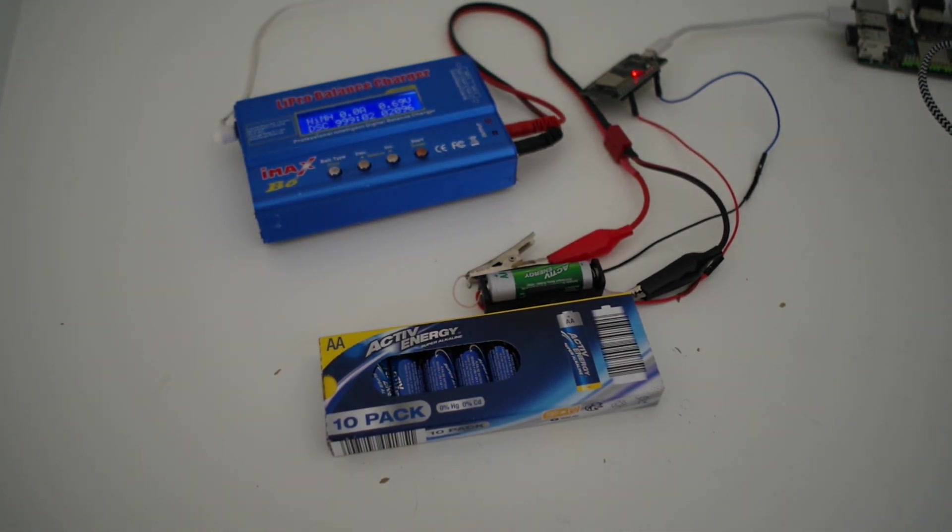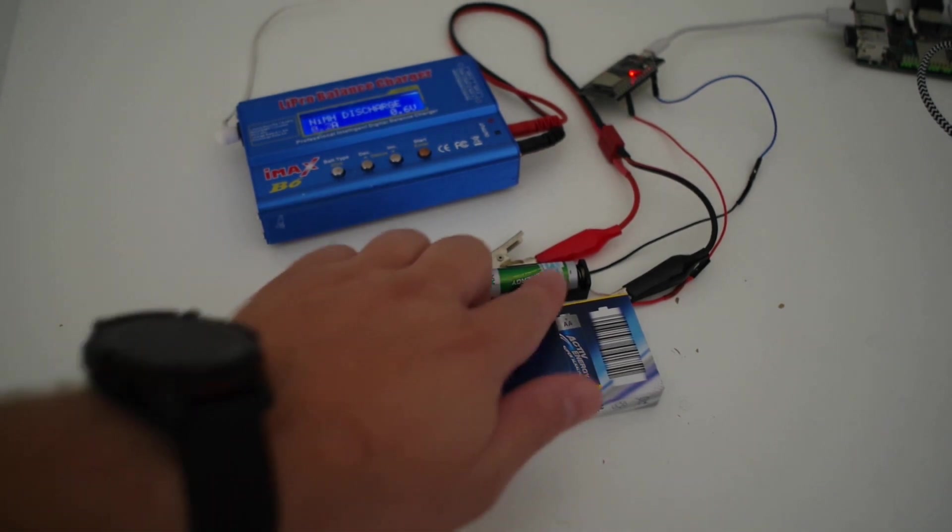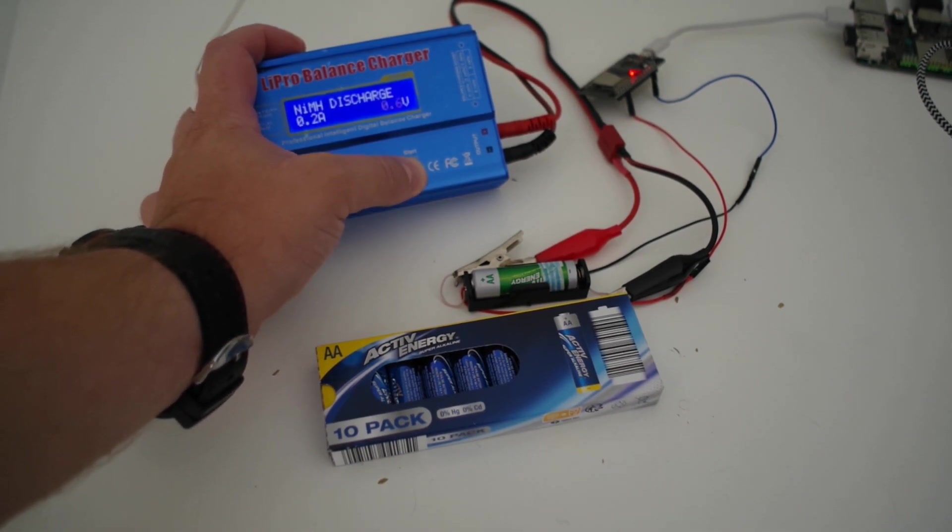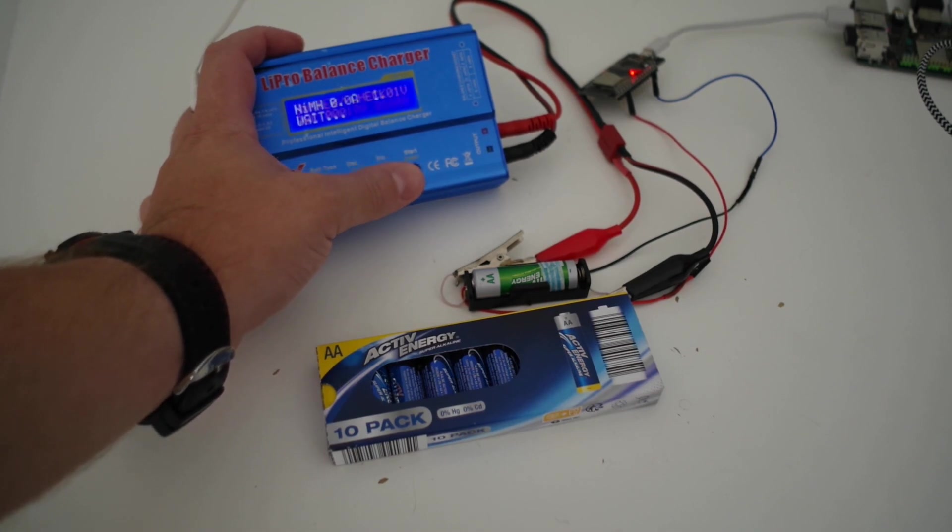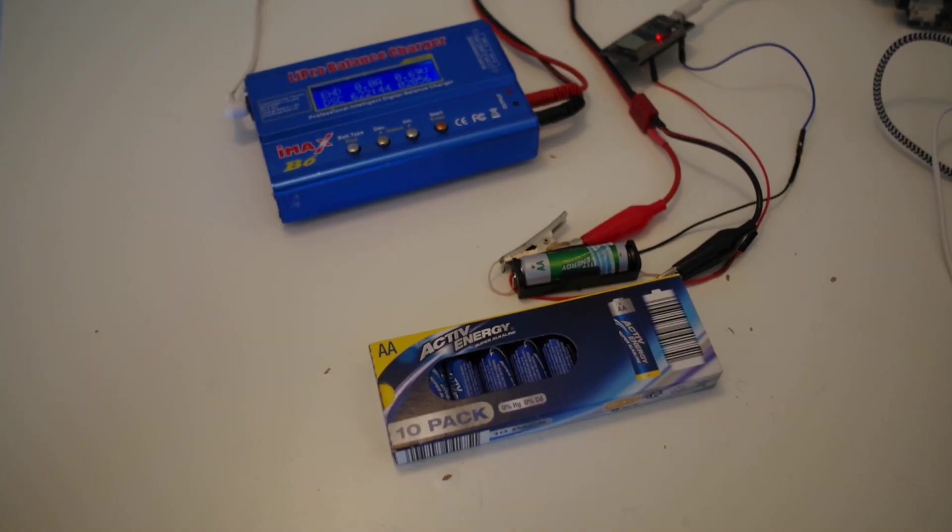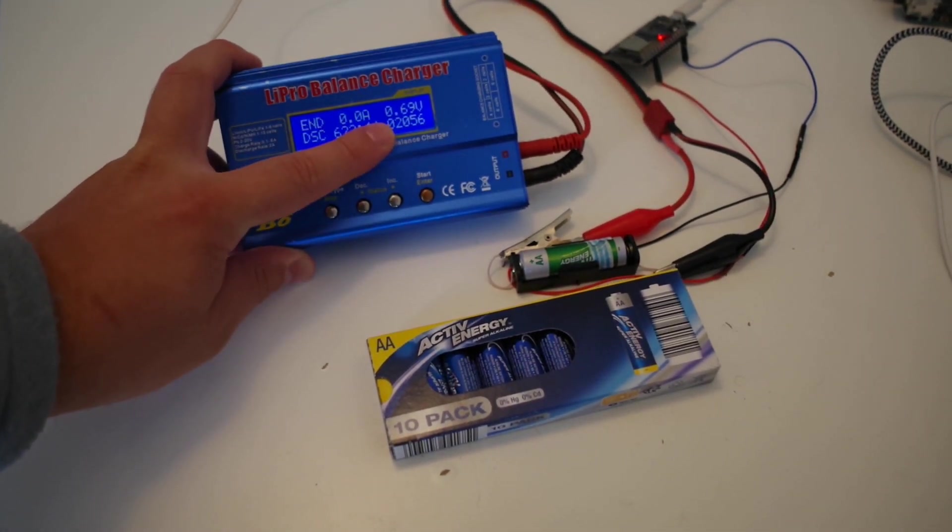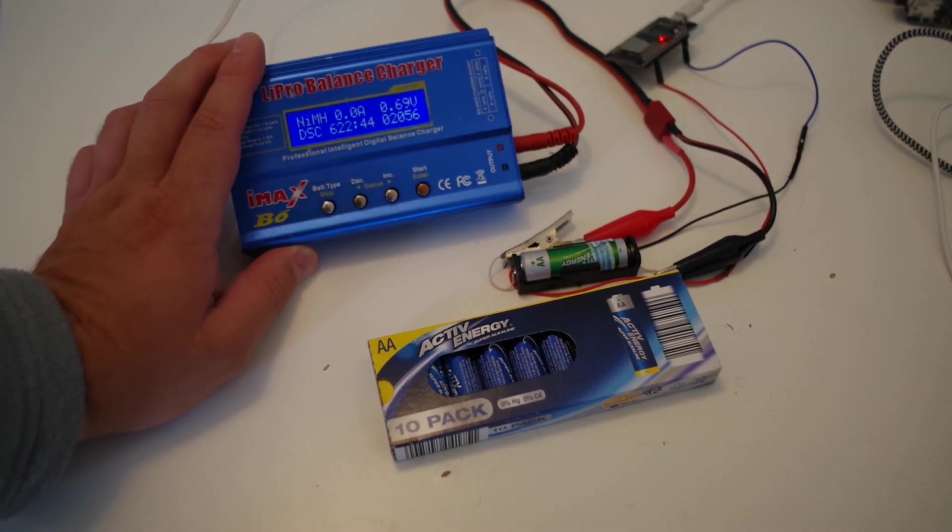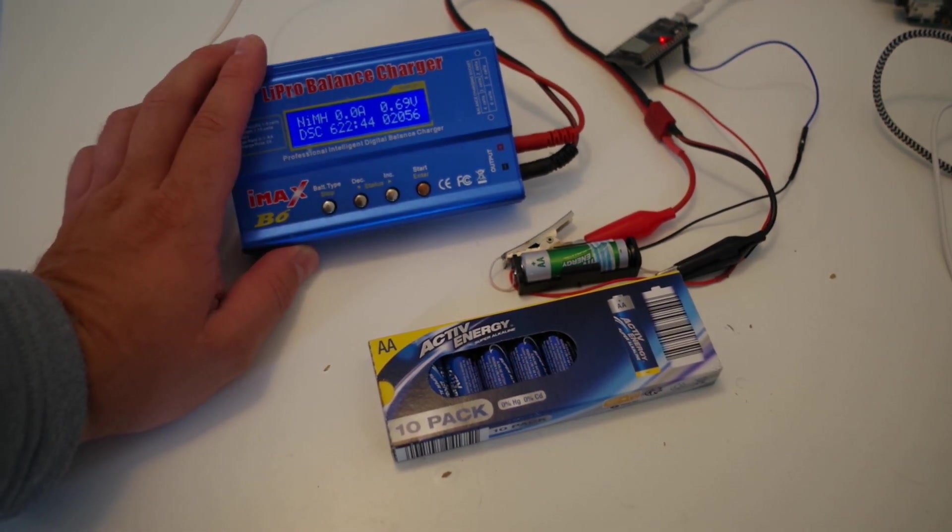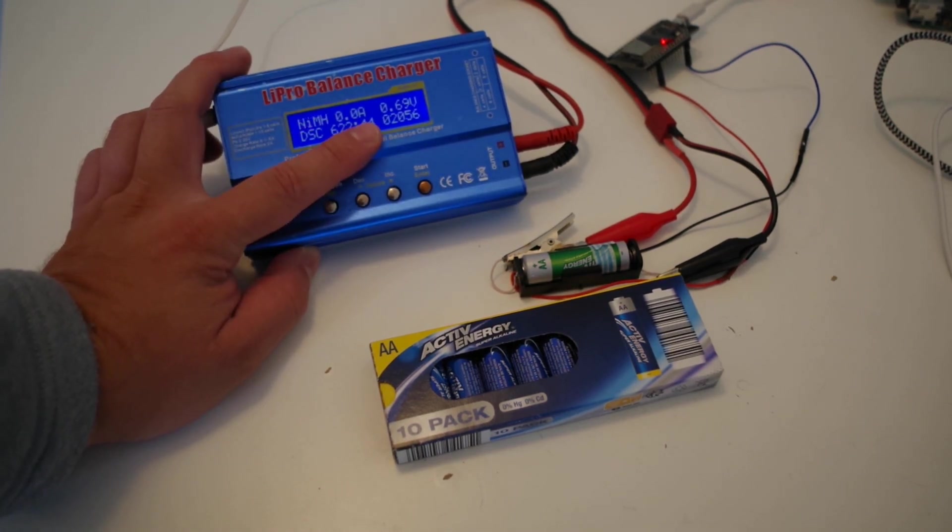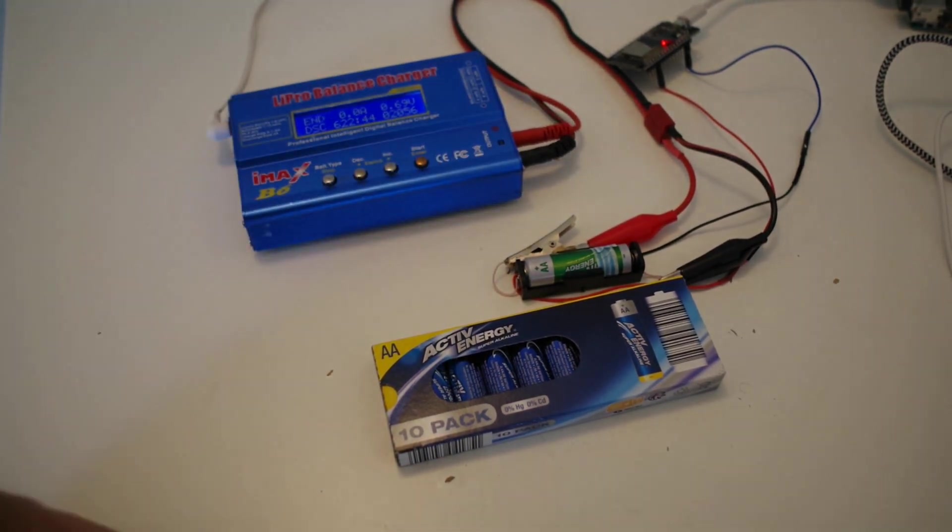Let's check second one with 0.2 amps. 0.2 amp discharge is finished and we can see exactly the same picture here. So it seems like this cell is not 2,500 mAh but they're most likely about just 2,000 mAh. So it's quite interesting. Let's check with half an amp.